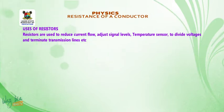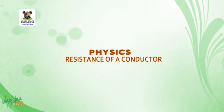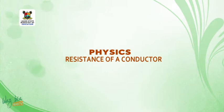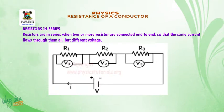We also want to look at resistors in series and in parallel. Welcome back. When we say resistors are in series, it is when two or more resistors are connected end to end so that the same current flows through them all, but different voltages appear across each.